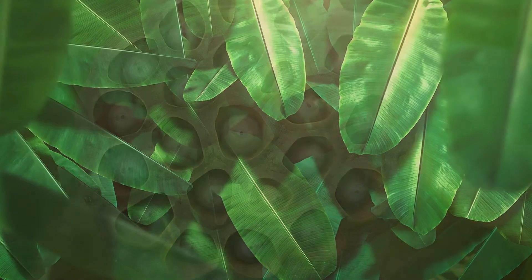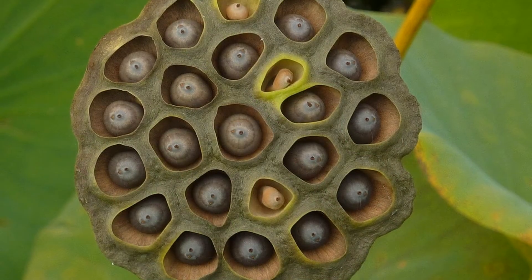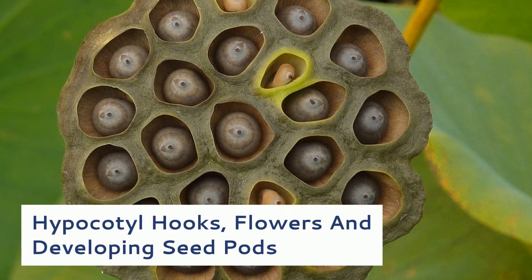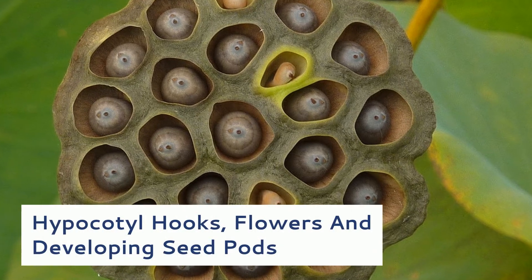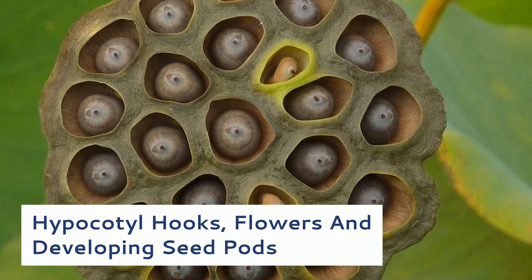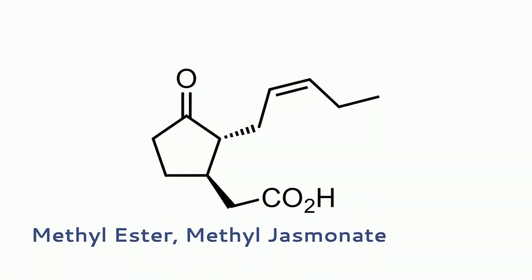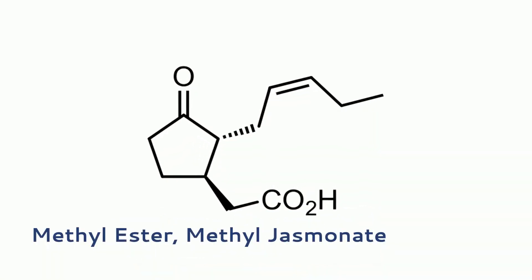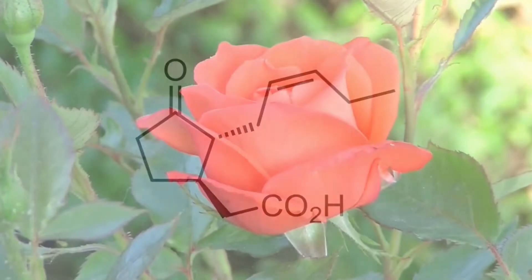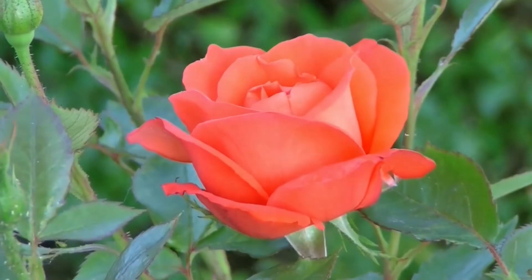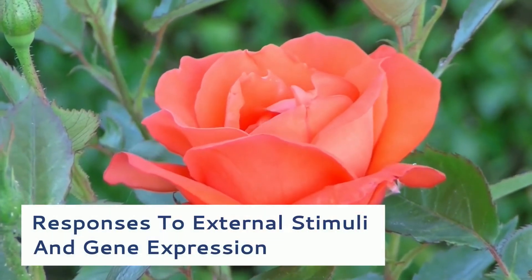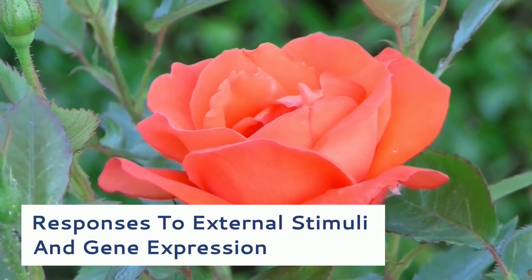The highest levels of jasmonate accumulate in actively growing tissues such as hypocotyl hooks, flowers, and developing seed pods. Jasmonic acid and its methyl ester, methyl jasmonate (JAME), are naturally occurring regulators of higher plant development, responses to external stimuli, and gene expression.